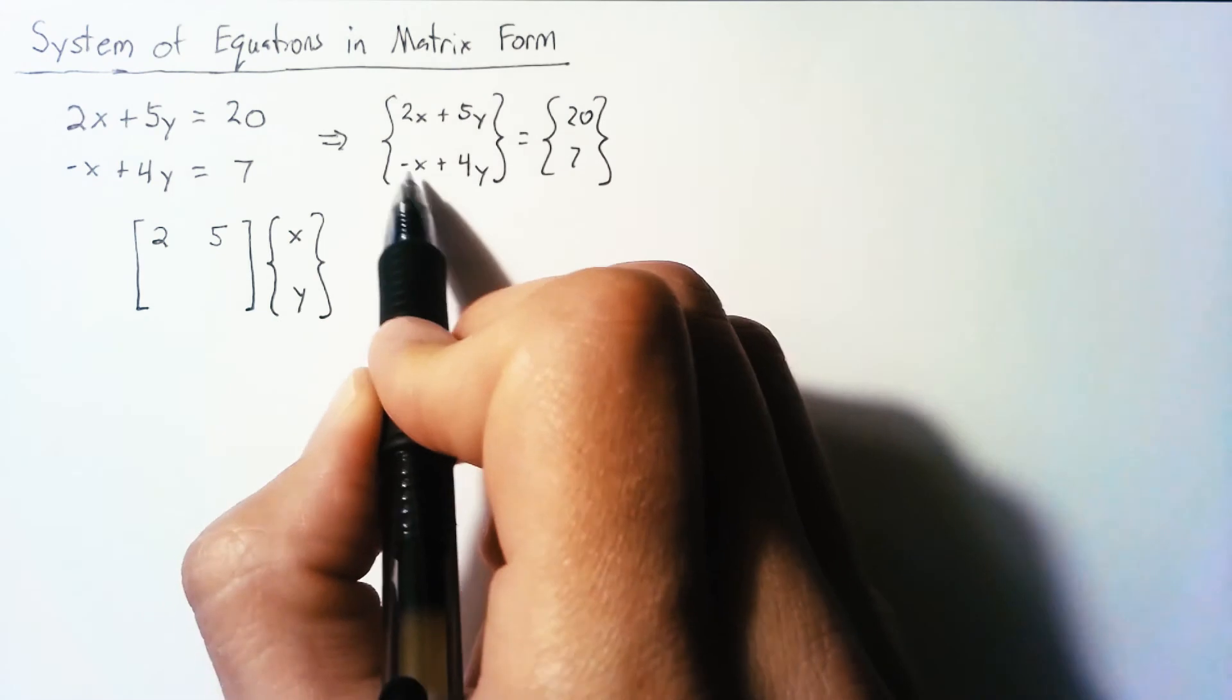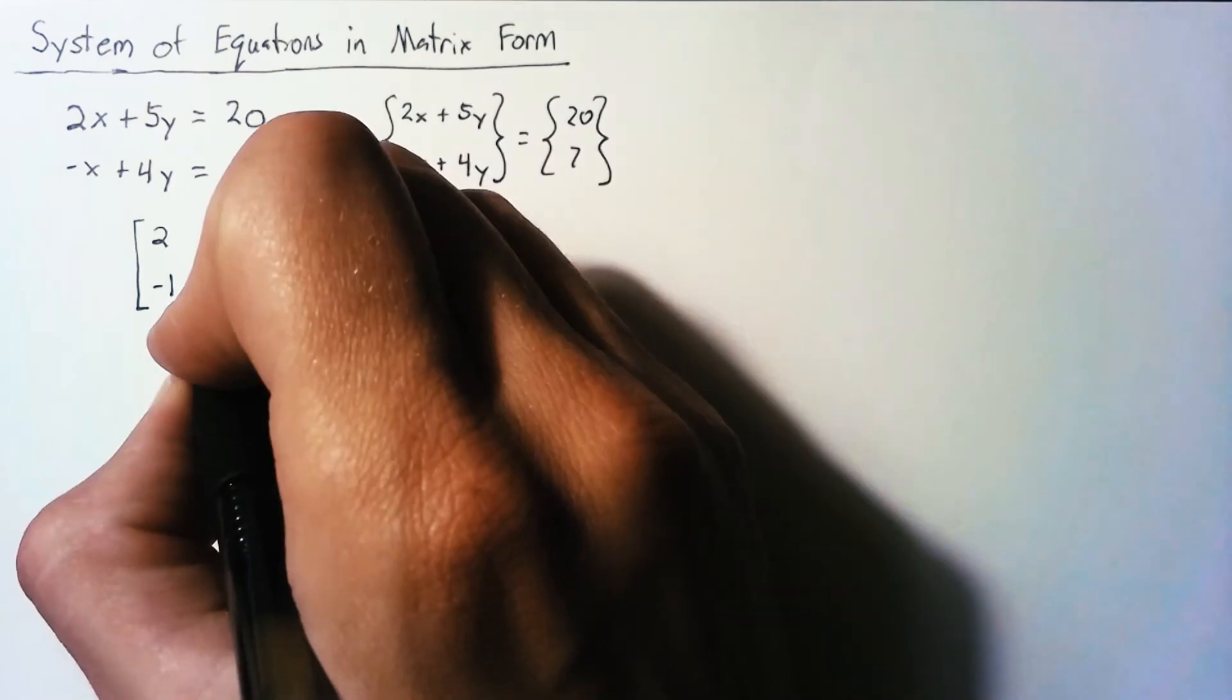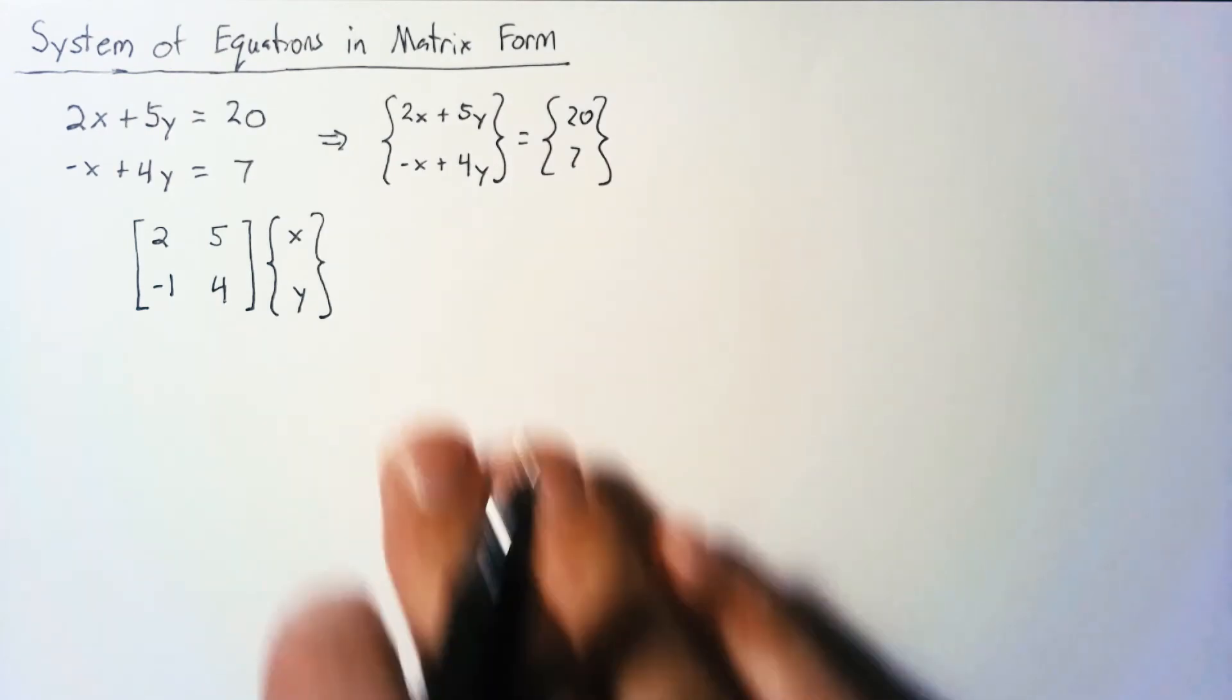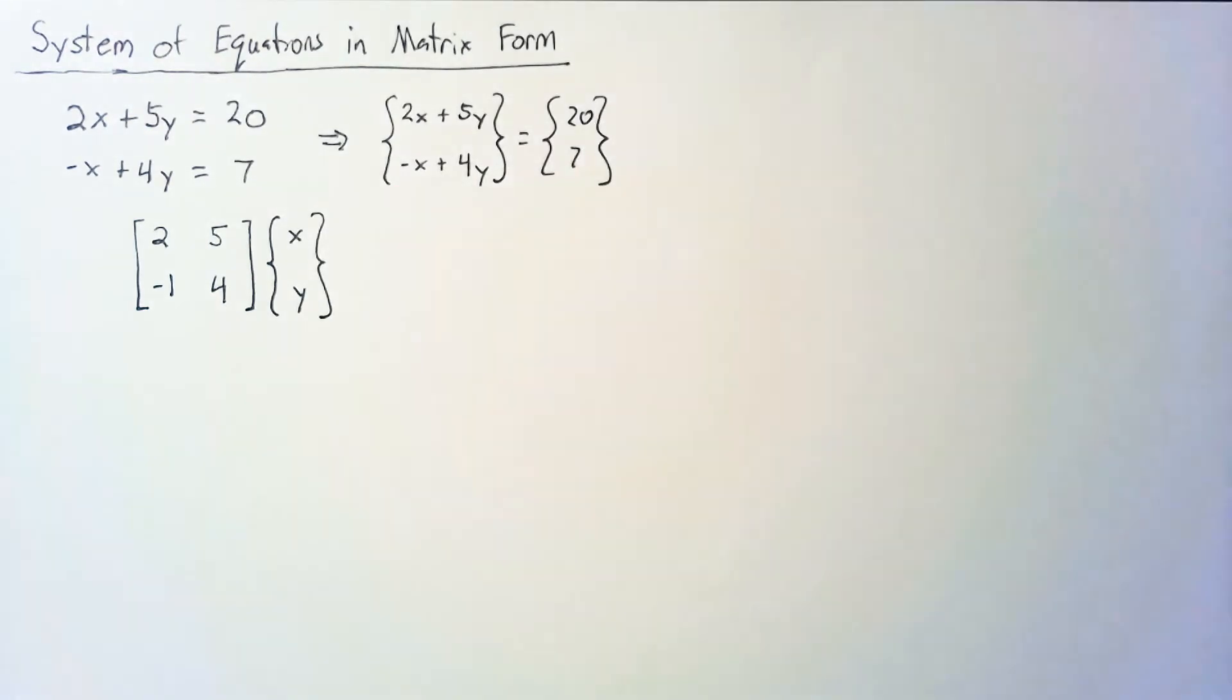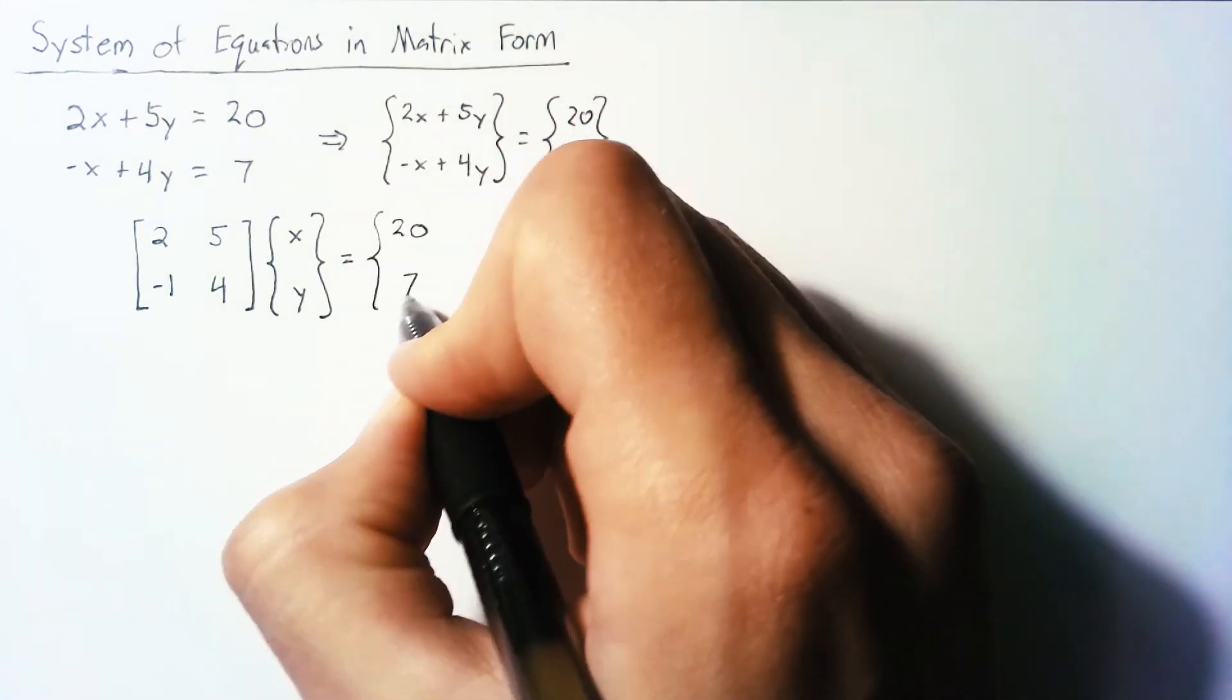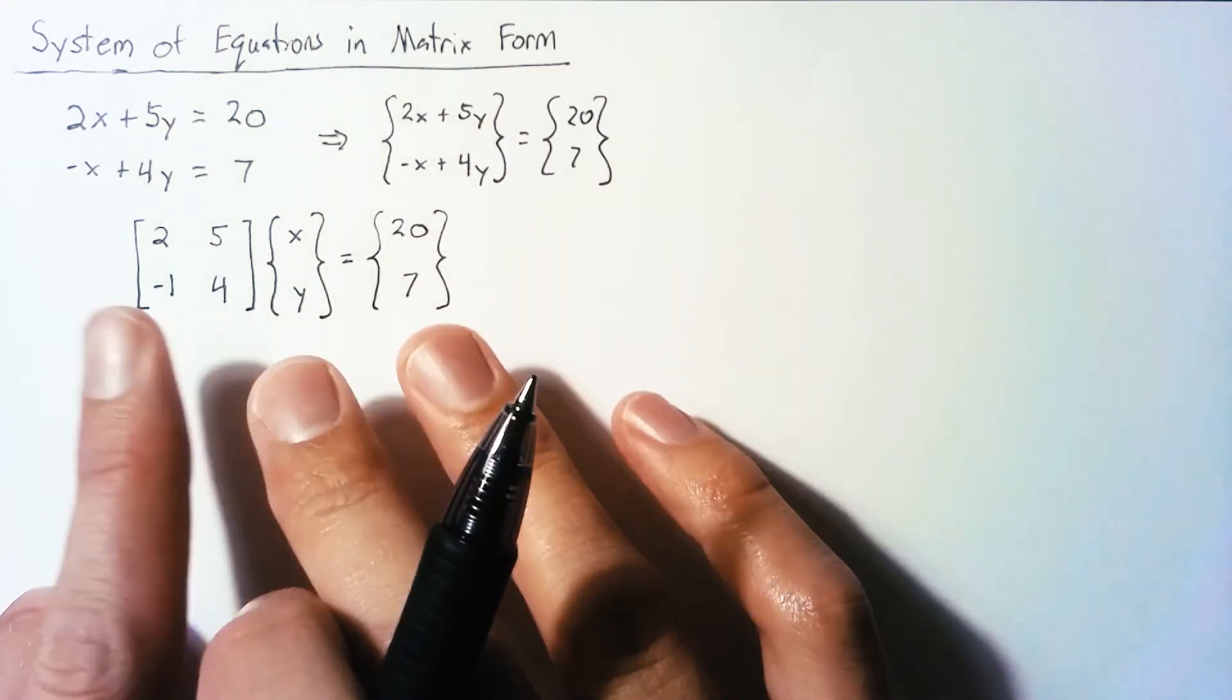So our second row here, we take the negative one in the x column and the four in the y column and we can write those two in and we'll end up with the second element of our vector. And so we're just going to leave that as 20 times 7. So this is the matrix form of our system of equations.